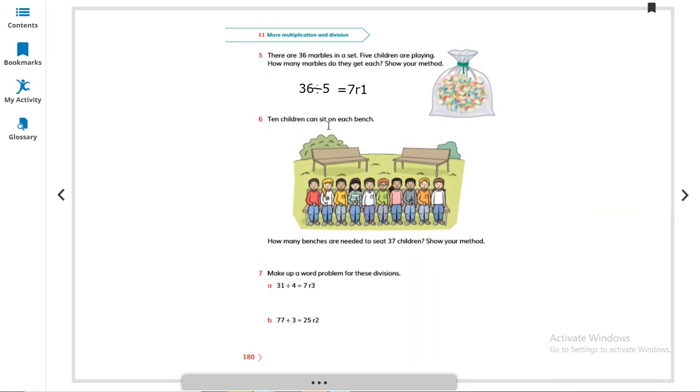Question 6: 10 children can sit on each bench. How many benches are needed to seat 37? So 37 divided by 10 equals what? Actually, for 1 bench, 10 children. So 10 multiply by 4 is 40. No, we need 37. 10 multiply by 3 and remainder 7. This means 3 and remainder 7, or we can say approximately 4 benches are needed for 37 children.